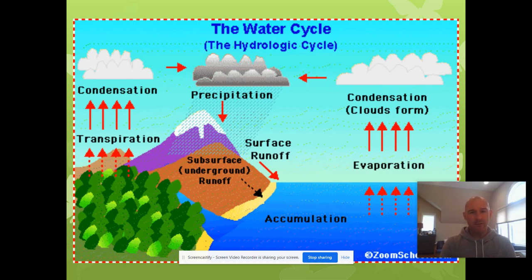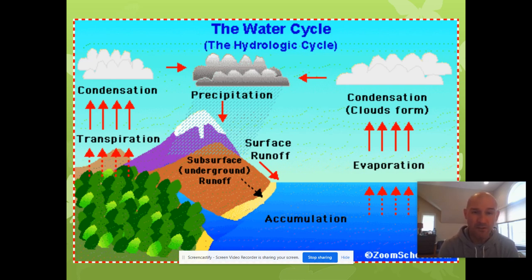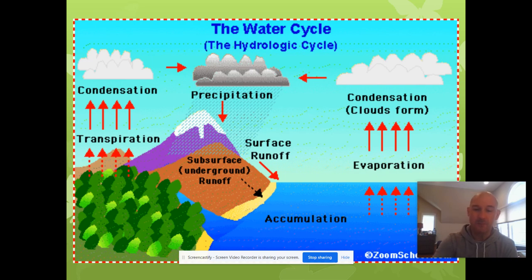Those water molecules in various forms are collected as snow or rain. That can run as surface water in lakes, rivers, and streams, or it could be groundwater absorbed into the ground. Eventually that water cycles through and ends up in some type of reservoir — whether it's an aquifer underground, a lake, a river or stream, or even back to the ocean. And that kind of completes the cycle.